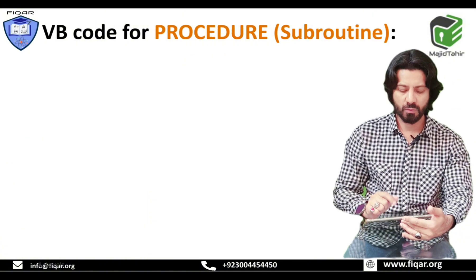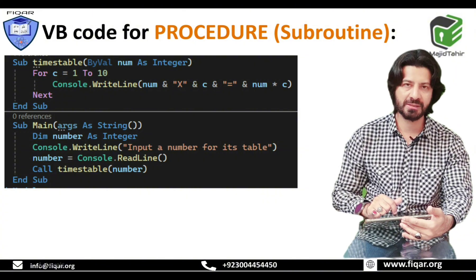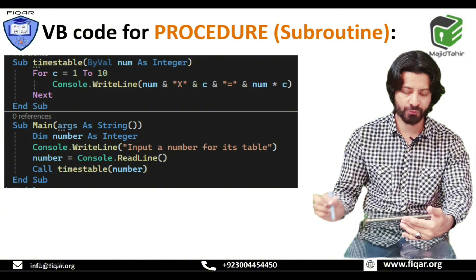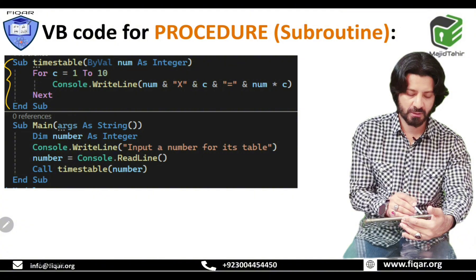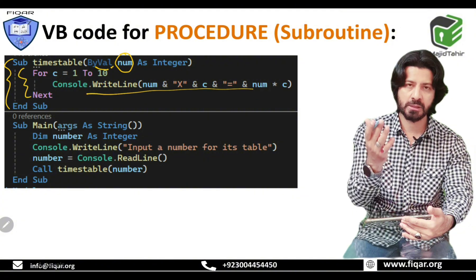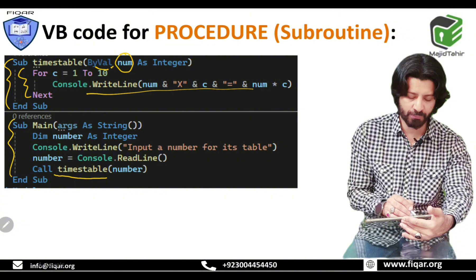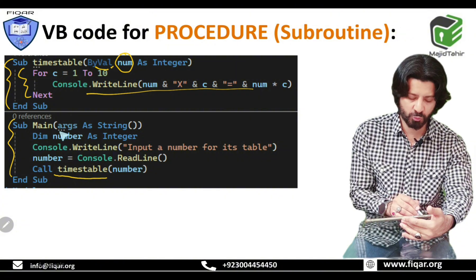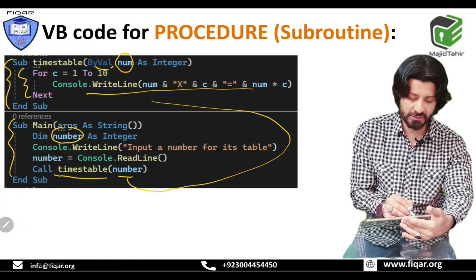Now the VB code for the procedure: in Visual Basic, procedures are called subroutines. Here is a subroutine named TimesTable — the same thing as before. The parameter num is used, the FOR loop runs the same process we saw in the pseudocode. In the main program, when you want to call the procedure, you use the CALL keyword with the name of the subroutine, and the variable number — declared earlier — is written inside, which applies its value to the parameter.